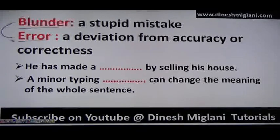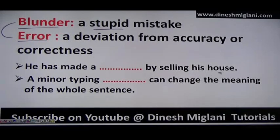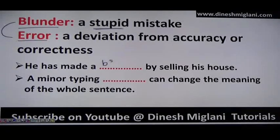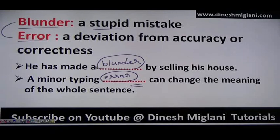Next: 'blunder' and 'error.' Although both are mistakes, a blunder is a stupid mistake not expected from a person. An error is a small deviation from accuracy or correctness. Example: 'He has made a blunder by selling his house' — a very stupid mistake. 'A minor typing error can change the meaning of the whole sentence' — here error is a small deviation from correctness.